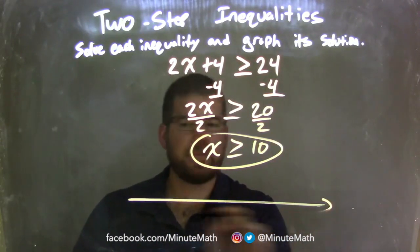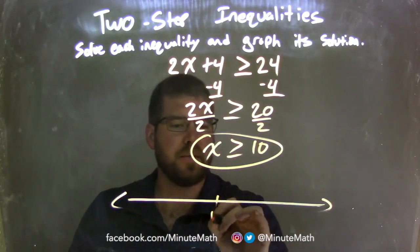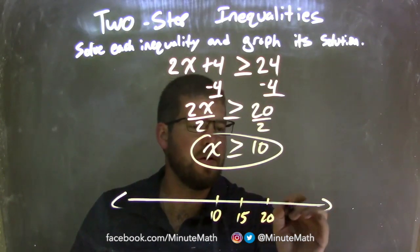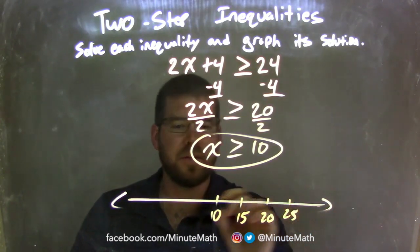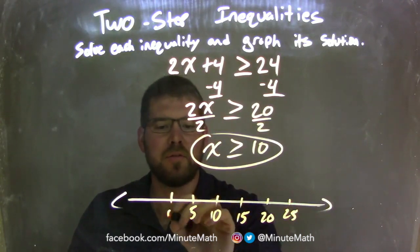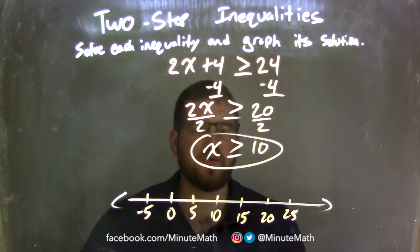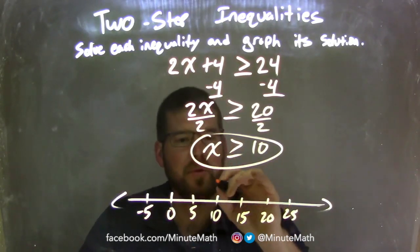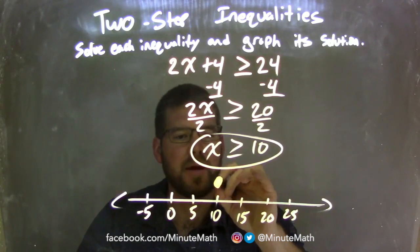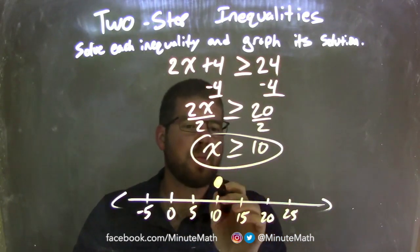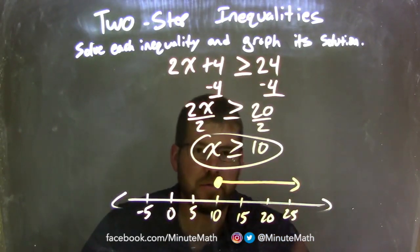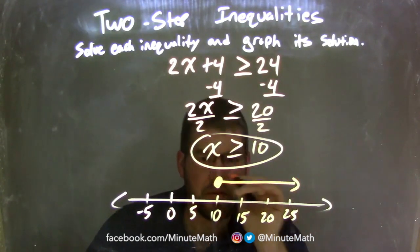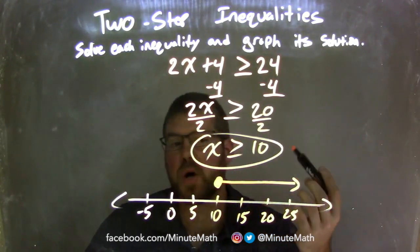So let's graph this on the number line. Let's put 10 here and go by 5s: 15, 20, 25. And down here we have 5, 0, and negative 5. Since x is greater than or equal to 10, if it's equal to we have a closed circle right at 10, and since it's greater than we put our arrow to the right. So now our graph matches our inequality.